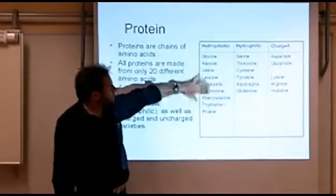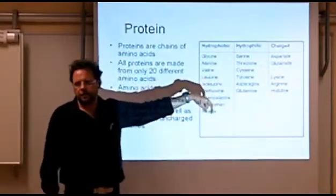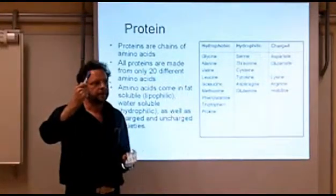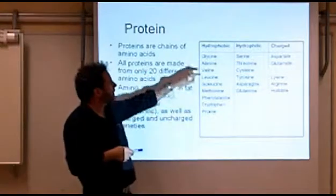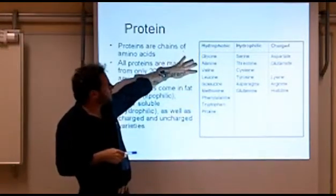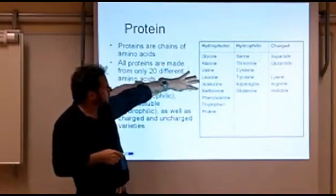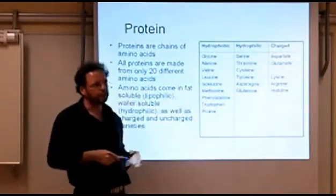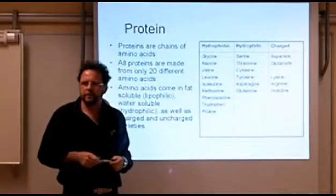I'm just going to read them out to you. I'm not expecting you to rote-learn them. I just want you to once have heard this is something that's an amino acid. Glycine, alanine, valine, leucine, isoleucine, methionine, phenylalanine, tryptophan, and proline. Do any of those names sound vaguely familiar?